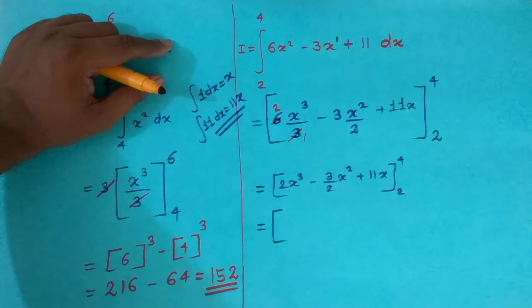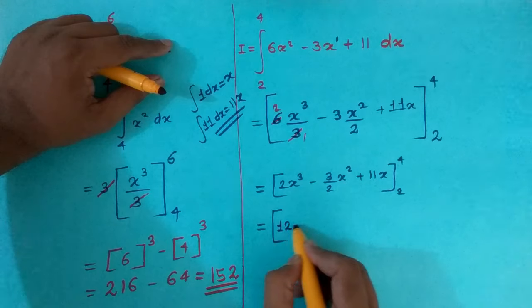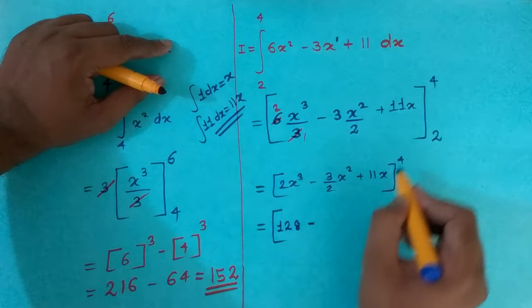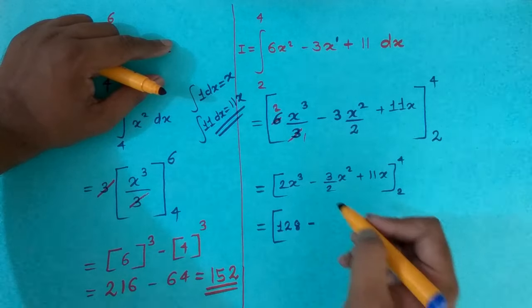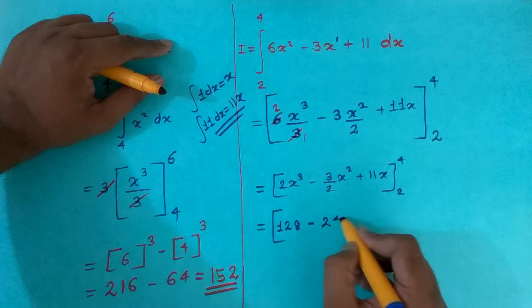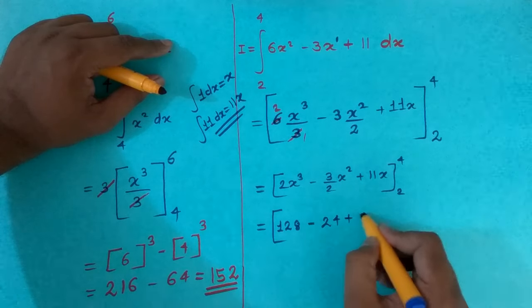4 cube 64, 64 into 2 would become 128 minus 4 4 square 16, 16 divided by 2 8, 8 3 times 24. Put 4, 4 4 into 11 is 44.